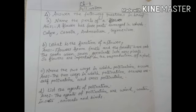Now from question number 4: Answer the following questions in brief. Now number A: Name the parts of a flower. In our book it is written plant, it will be flower - Name the parts of a flower. Answer: A flower has 4 parts arranged in whorls: Calyx, Corolla, Androecium, Gynoecium.